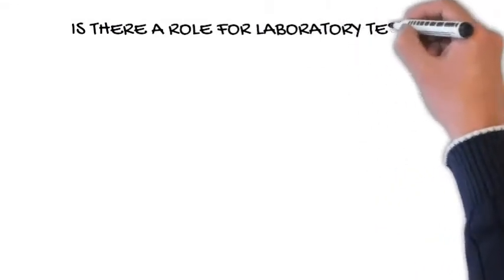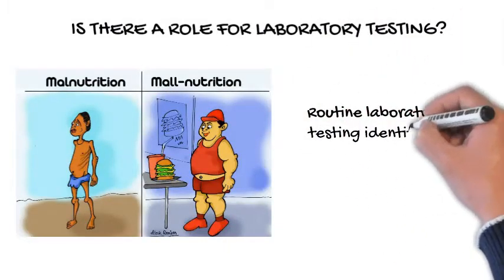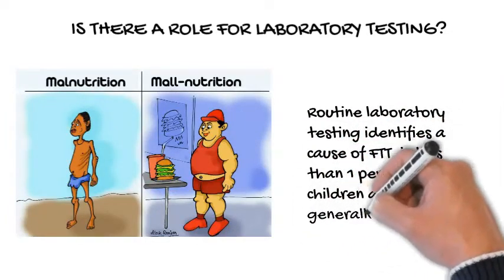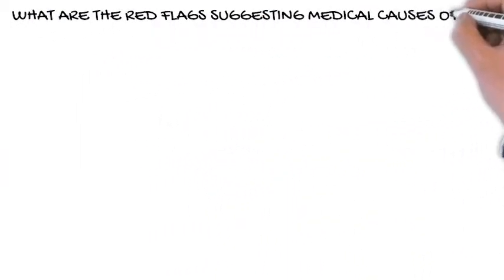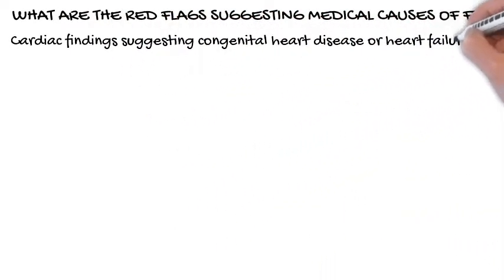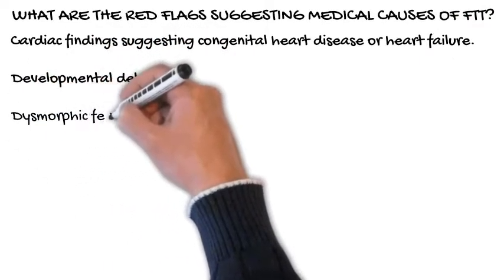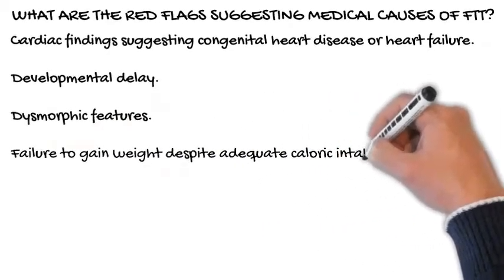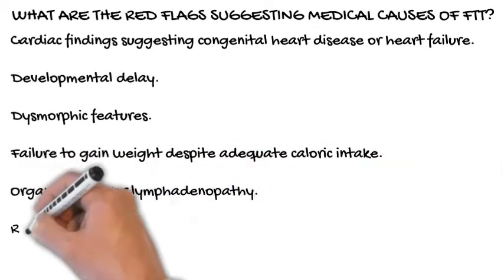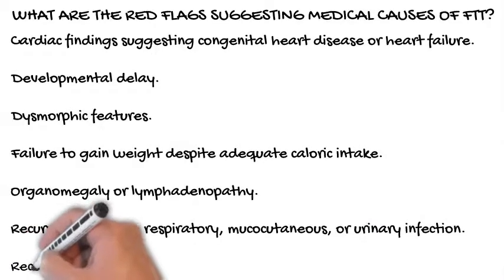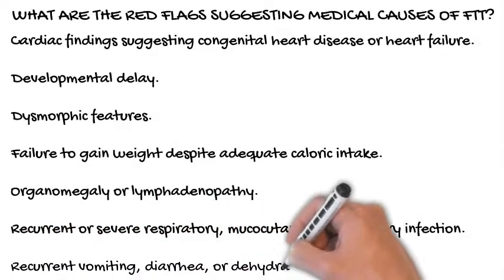Is there a role for laboratory testing? Routine laboratory testing identifies a cause of FTT in less than 1% of children and is not generally recommended. What are the red flags suggesting medical causes of FTT? These include cardiac findings suggesting congenital heart disease or heart failure, developmental delay, dysmorphic features, failure to gain weight despite adequate caloric intake, organomegaly or lymphadenopathy, recurrent or severe respiratory, mucocutaneous, or urinary infection, and recurrent vomiting, diarrhea, or dehydration.